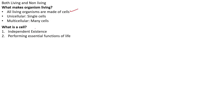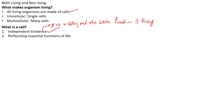All living organisms are made up of cells — that is true. On what basis do we call something a cell? The first basis is that it should exhibit independent existence — meaning it can live and carry out the basic functions of a living organism. That is what we mean by independent existence.